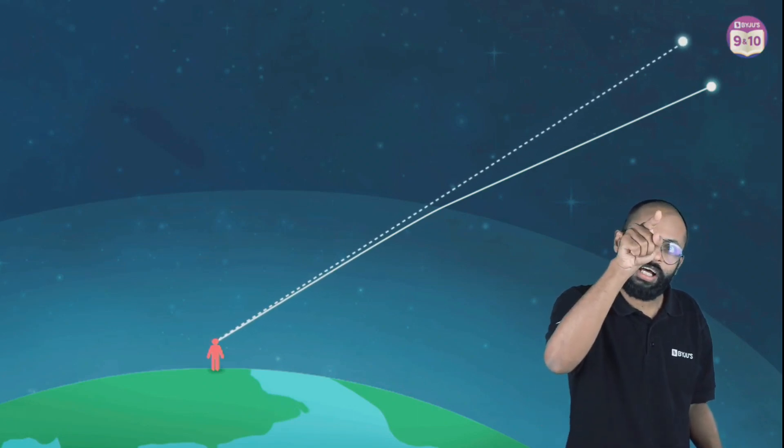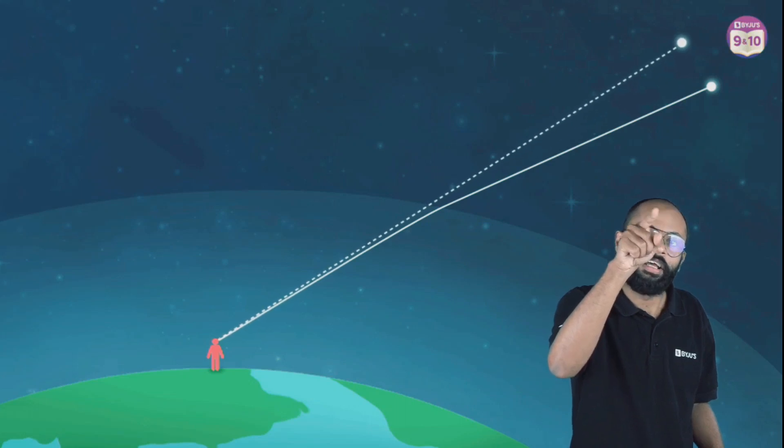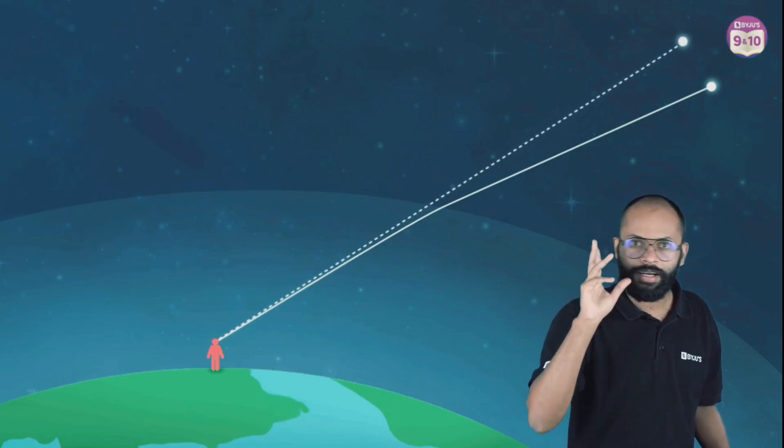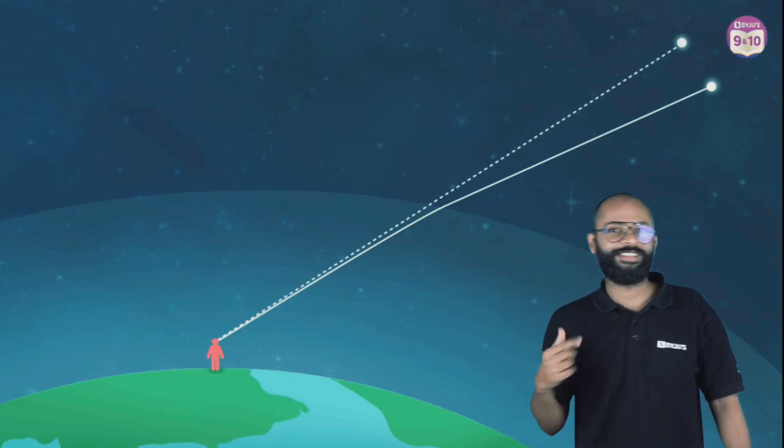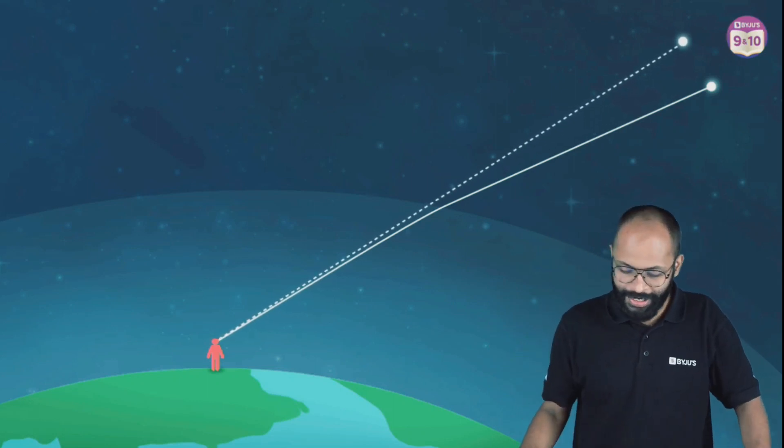This is what we call as twinkling of the stars. Twinkling doesn't mean switching on and off, twinkling means the position was here, suddenly went there, then there, then there. You feel like the star is doing this. This is what we call as actual twinkling of the star.